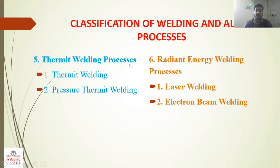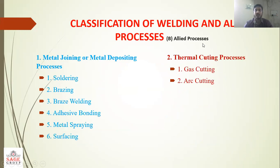Next is thermite welding, which has two types: thermite welding and pressure thermite welding. Next is radiant energy welding process, which has two types: laser welding and electron beam welding. Next are allied processes in welding, which are of two types: metal joining or metal deposition processes, and thermal cutting processes.